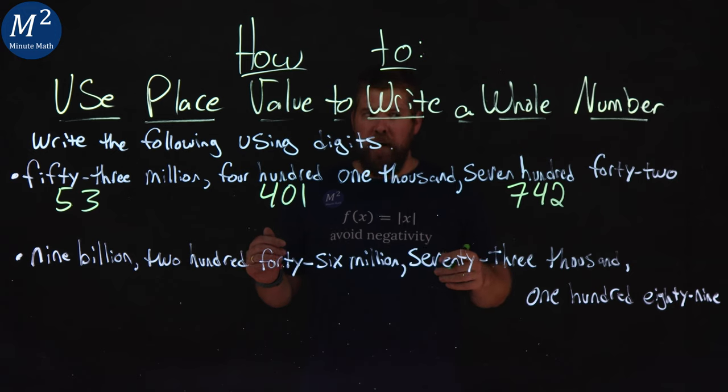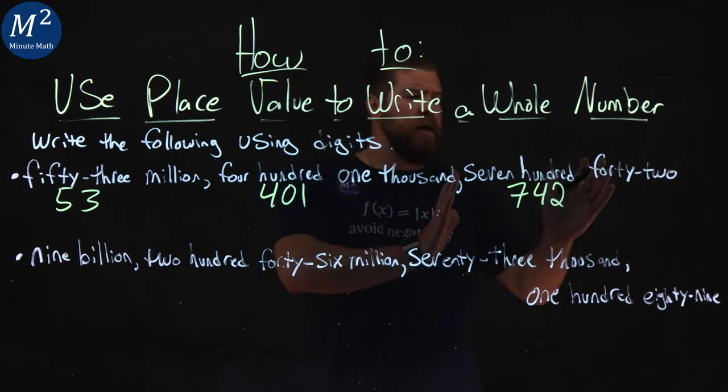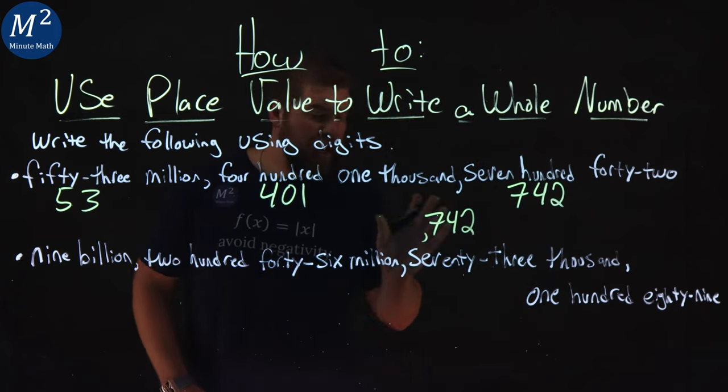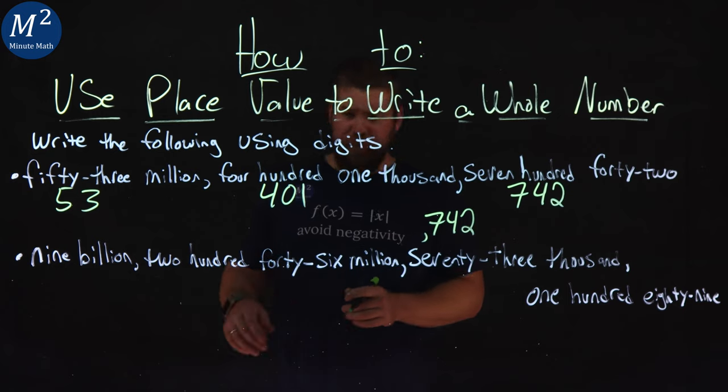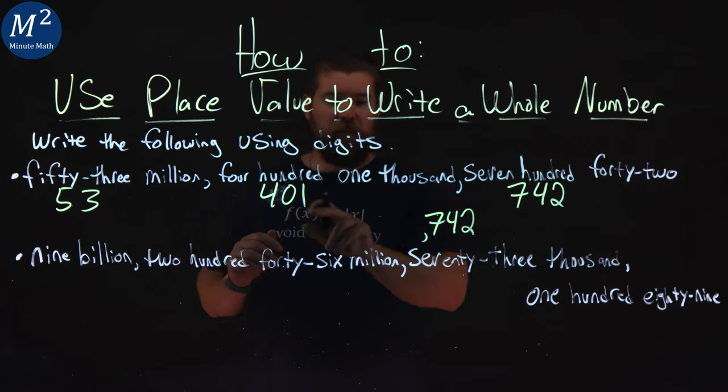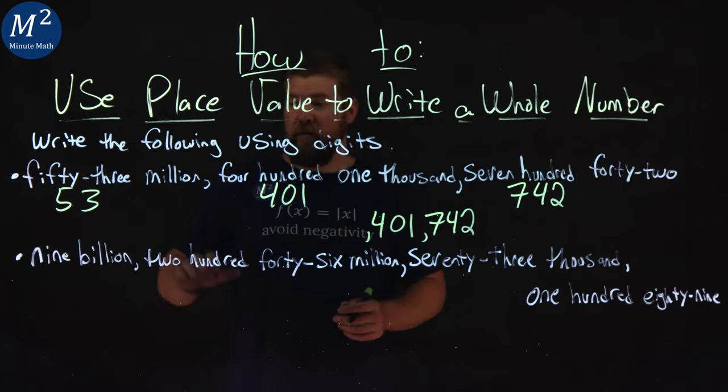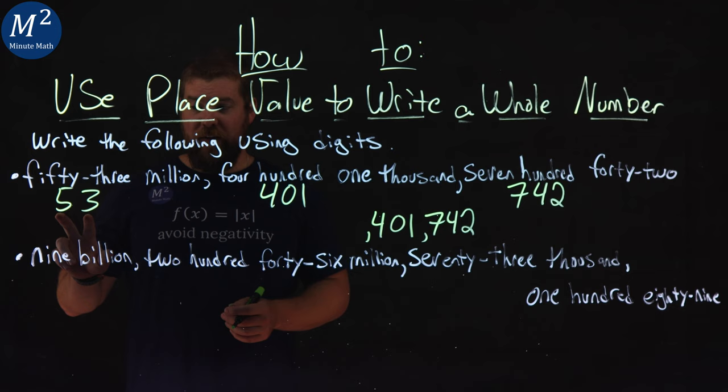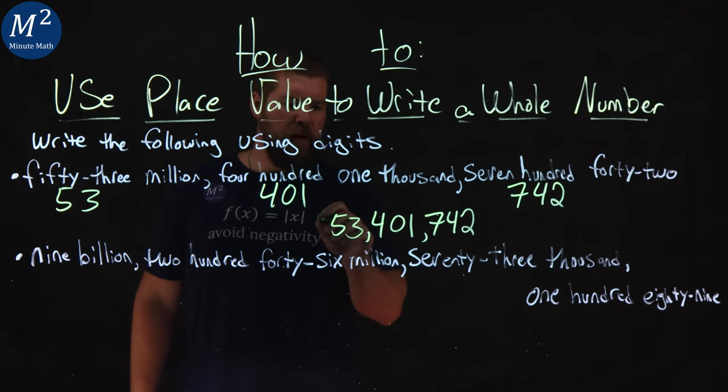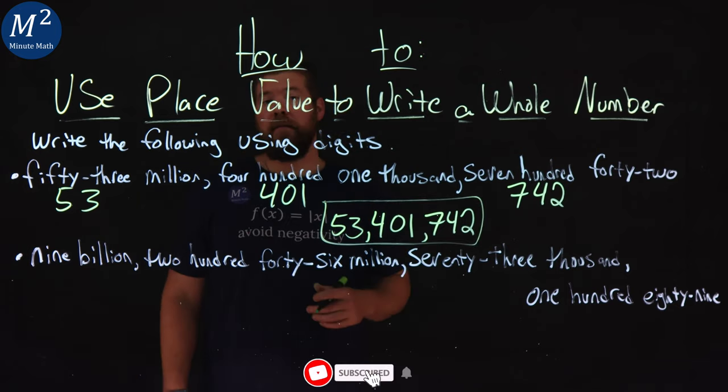Now to combine them all together, I start from the bottom and work our way up. In the first part, we have 742. Pretty simple. A comma separates each section here, and we have 401,000 in the thousand section. So we put the 401 right here. After the thousands, we get the millions, and we just have 53 million there. So 53 gets tossed in here, and there we have it. 53,401,742.